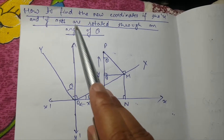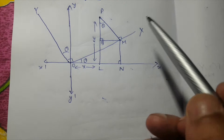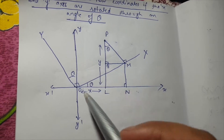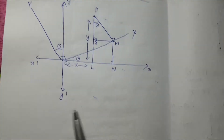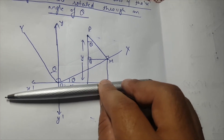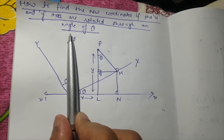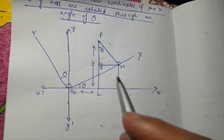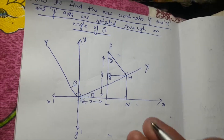Today we're going to find out how to find the new coordinates if the x and y-axis are rotated through an angle of theta. If you have x-axis x-OX and y-axis y-OY, and you rotate them through an angle of theta in the anticlockwise direction, the rotated lines become your new x-axis OX and new y-axis OY.